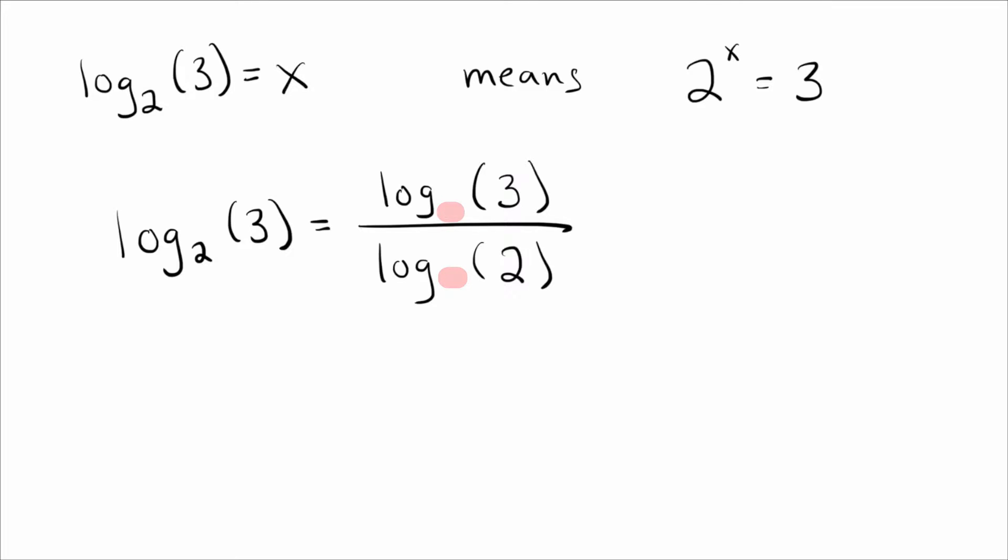Instead what you put is something like 10, since your calculator has a log base 10 button. And then that you can do. You can type into your calculator log base 10 of 3, and when you do that you get the top is roughly 0.477. And you can type in log base 10 of 2, and that gives you about 0.301. Go ahead and divide those two and you get roughly 1.58.